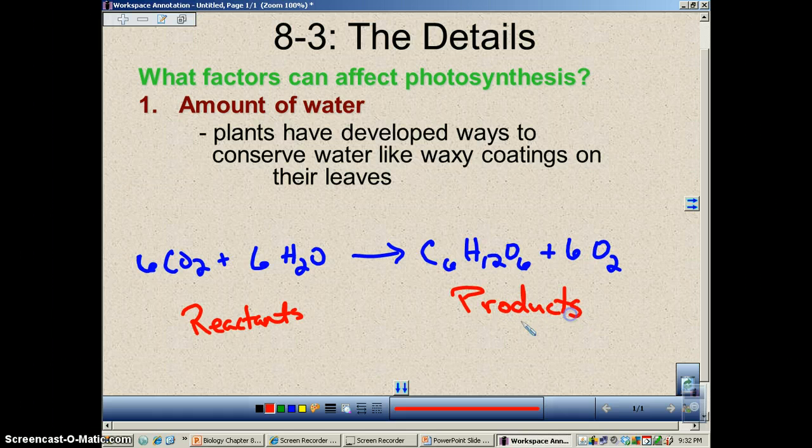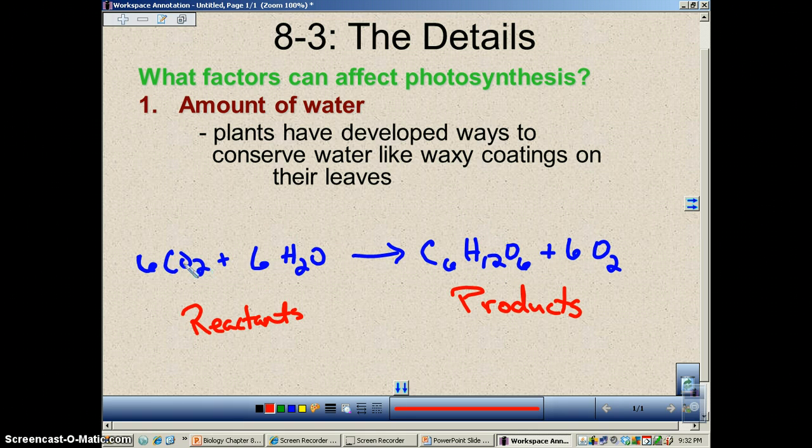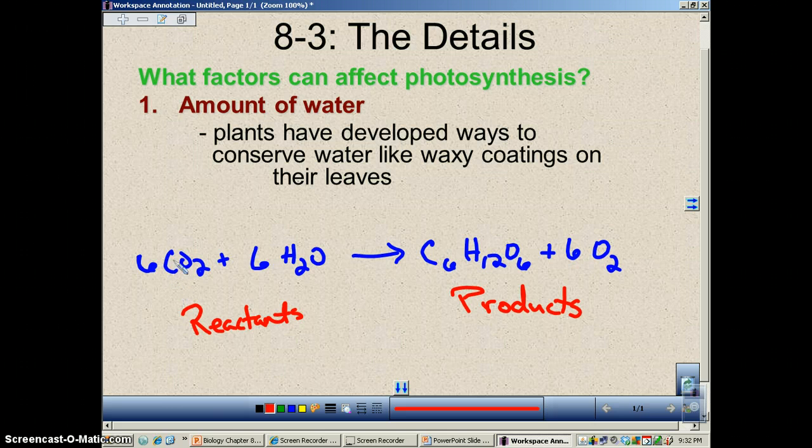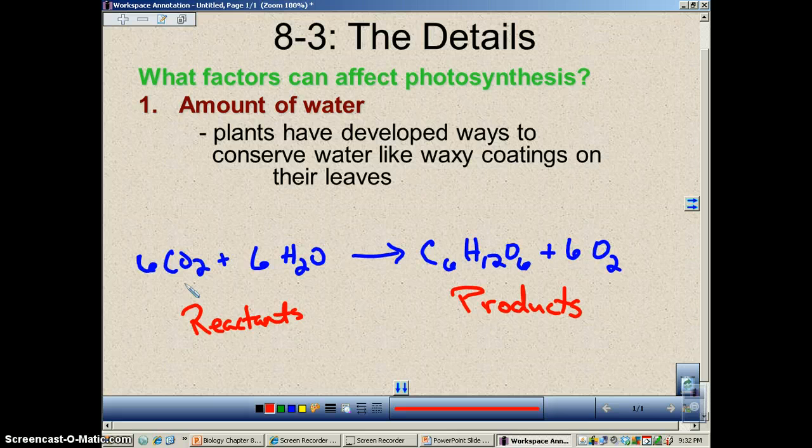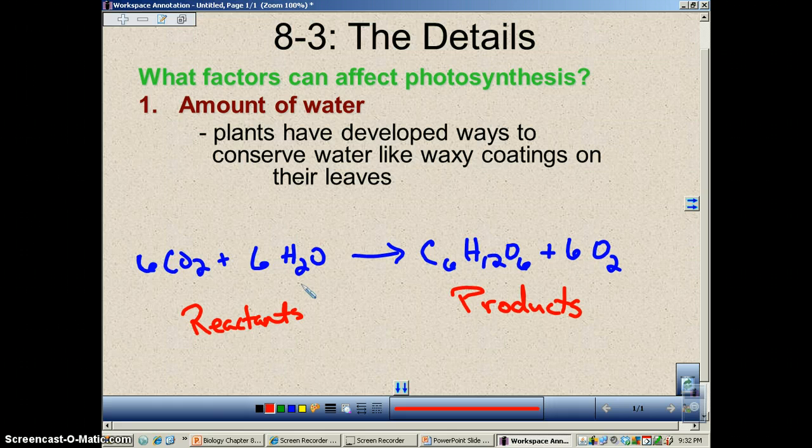And any time that you limit one of the reactants, you're going to make the whole equation go a lot slower. Now, the carbon dioxide is just kind of out there in the atmosphere. You don't have to worry about ever running out of it. In fact, in this era of global warming, there's more and more of this stuff out there anyway. The limiting factor whenever it comes to photosynthesis is always the amount of water.